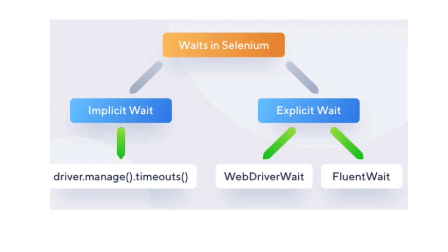There are two types of waits. The first one is implicit wait and the second one is explicit wait. Implicit wait is defined using driver.manage.timeouts, as you can see on screen. Explicit wait also has two types: WebDriverWait and FluentWait. Mostly we use implicit wait and explicit wait only — FluentWait is part of explicit wait but we don't typically use it.